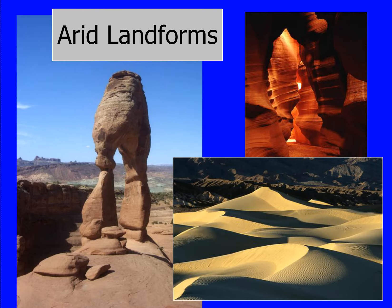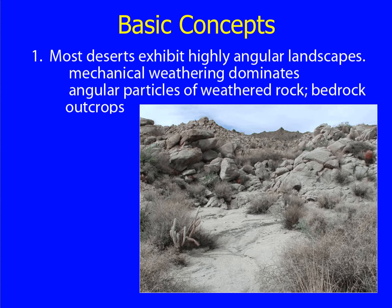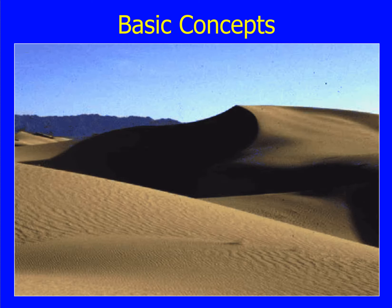Dry areas and deserts of the world are affected by water and wind differently than areas with thicker ground cover. There are some basic concepts that surround arid regions. Most deserts exhibit highly angular landscapes. Mechanical weathering dominates over chemical weathering, there are angular particles of weathered rock and bedrock outcrops. Softer, more rounded landscape occurs where deposition is prominent. The formation of sand dunes is common in these areas.